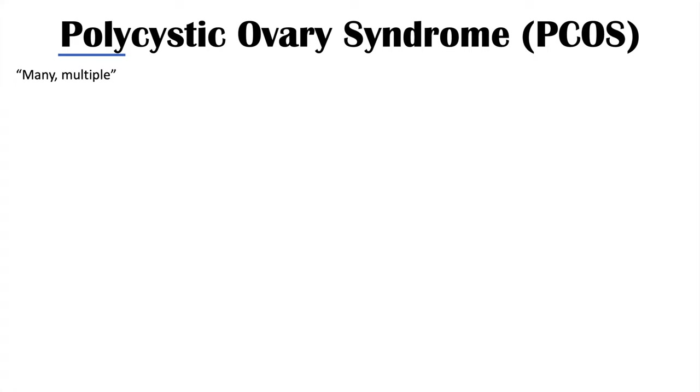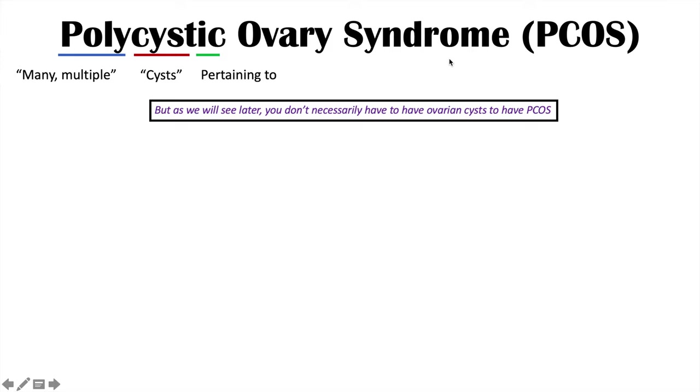So what is polycystic ovary syndrome? If we break down the word polycystic, the prefix poly means many or multiple, cyst refers to cysts, and the suffix means pertaining to. So this condition is a syndrome of many or multiple cysts in the ovary.